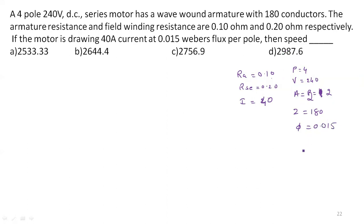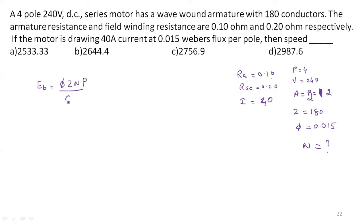We have to find the speed. For a series motor, we first find the back EMF using: Eb equals V minus Ia times (Ra plus Rse). The generated EMF formula is: Eb equals φZNP divided by 60 into A.